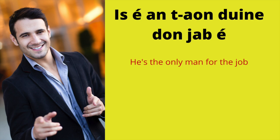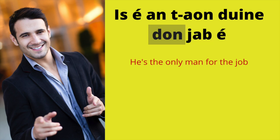'Is é an t-aon duine don job é?' — He's the only man for the job. If we look at that, 'is é an t-aon duine do na' means he is the only person, or the one person. 'Don job é' means for the job. 'Don' is used here because it's referring to a singular thing, and that singular thing is the job that's available.